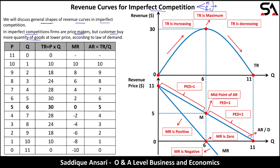Customers buy more quantity at lower prices according to the law of demand. So price is decreasing: 11, 10, 9, 8, and quantity increases: 0, 1, 2, 3, 4, 5, 6. Using TR = price × quantity: 11×0 = 0, 10×1 = 10, 9×2 = 18, 8×3 = 24. Total revenue initially increases, reaches a maximum of 30, then starts decreasing back toward 0. So the shape of total revenue initially increases, reaches a maximum, then decreases.